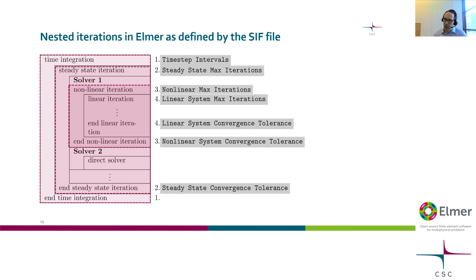For each solver, we have nonlinear iteration loops if needed, and the innermost loop is the linear system iteration for the linear system coming from the finite element discretization. We have keywords that control these iterations: for the outermost loop, the steady state keywords; for the nonlinear level, nonlinear keywords; and for the innermost, linear system keywords. These ensure that your solution is consistent. Sometimes they don't converge and you will end up with an ill-behaving solution — you should always follow how your iterations converge.